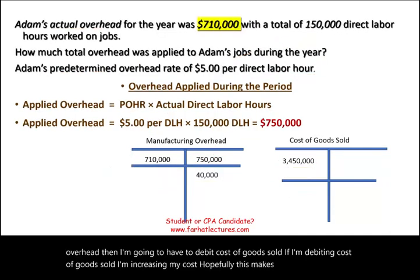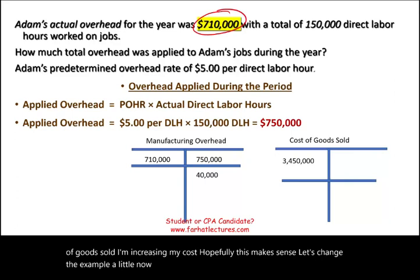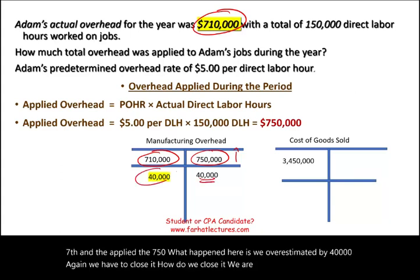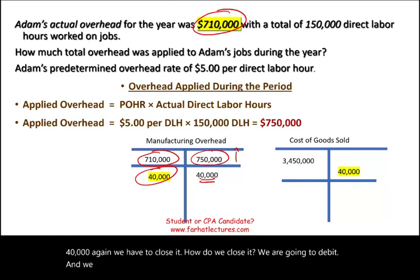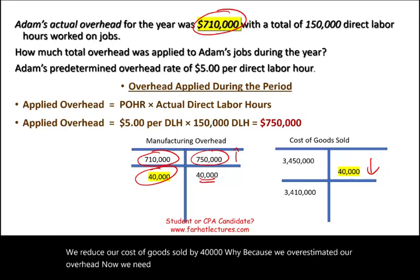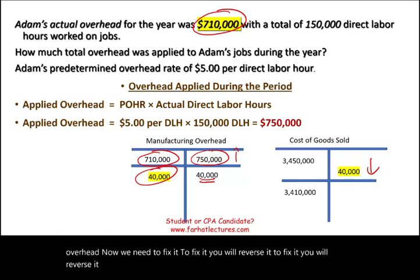Now let's change the example. Actual overhead is $710,000 and applied is $750,000. We overestimated by $40,000. We close it by debiting manufacturing overhead and crediting cost of goods sold, which reduces cost of goods sold by $40,000. Because we overestimated our overhead, we reverse it by closing to cost of goods sold.